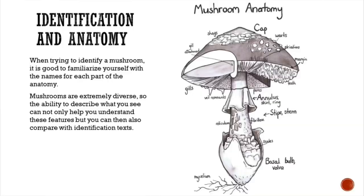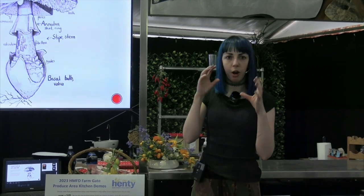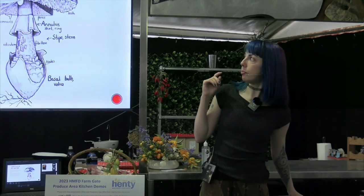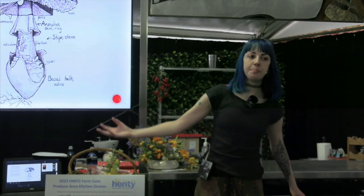The anatomy of the mushroom: mushrooms vary quite a lot. They don't all have a cap, they don't all have gills, and they might not even have a stipe, but they will have one of these elements. Being able to put words to what you see is very important. Mushrooms can have gills, pores, and teeth; they can have warts, striations, shags, an annulus which is like a skirt or ring, and a basal bulb at the base.